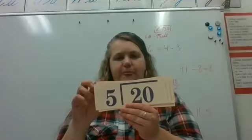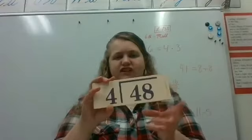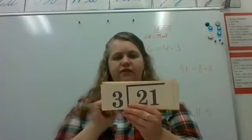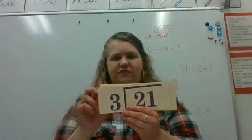72 divided by 6 — 12. 42 divided by 6 — 7. 48 divided by 6 — 8. 25 divided by 5 — 5. 20 divided by 5 — the answer would be 4. 48 divided by 4 — 12. 21 divided by 3 — that would be 7. 12 divided by 4 — that's 3. 27 divided by 3 — 9.